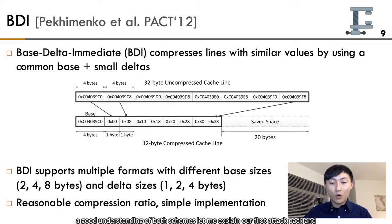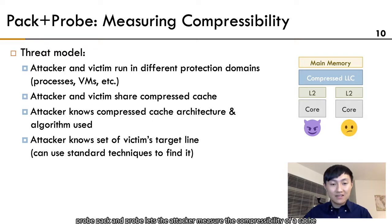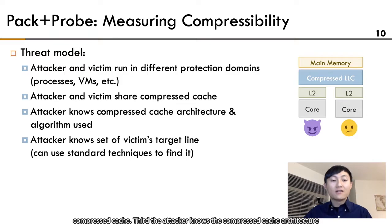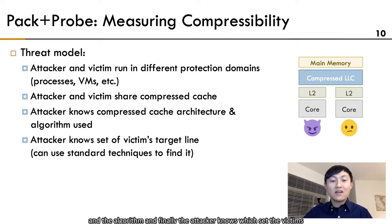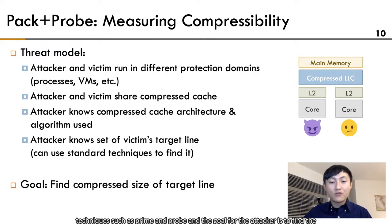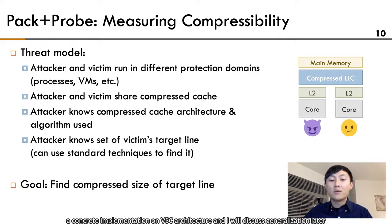Now that we have a good understanding of both schemes, let me explain our first attack, Pack and Probe. Pack and Probe lets the attacker measure the compressibility of a cache line. The threat model is: first, the attacker and victim run in different protection domains; second, they share a compressed cache; third, the attacker knows the compressed cache architecture and algorithm; and finally, the attacker knows which set the victim's target line belongs to — achievable using standard techniques such as prime and probe. The goal for the attacker is to find the compressed size of the target line. I'll show a concrete implementation on VSC architecture.